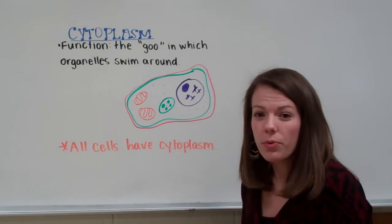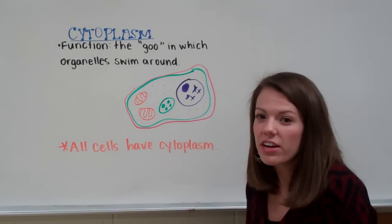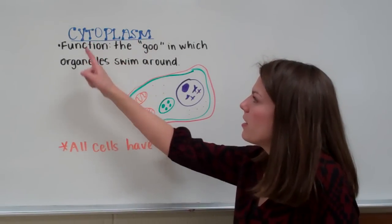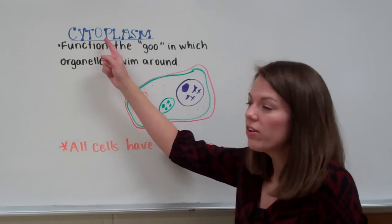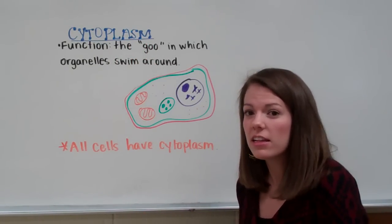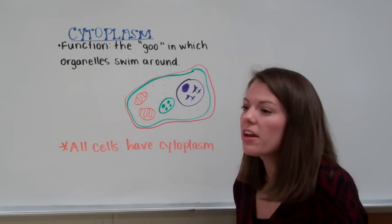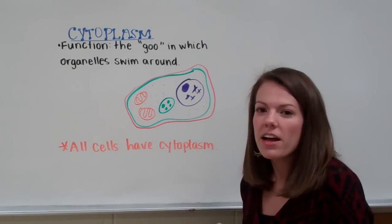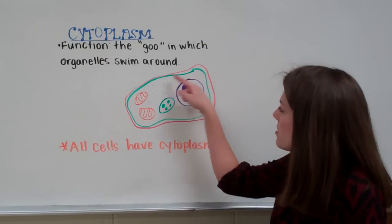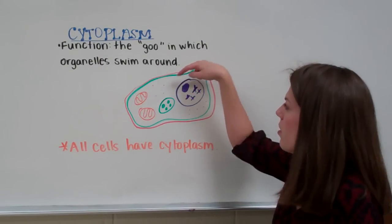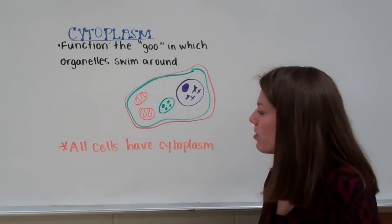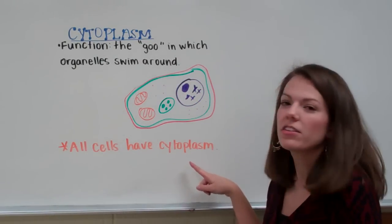The next cell structure is not actually an organelle — it's the material that organelles float around in inside a cell, called cytoplasm. 'Cyto' literally means cell, so cytoplasm is the cell goo that organelles like ribosomes, mitochondria, and chloroplasts float around in. The white space in a cell sketch represents the cytoplasm. All cells have cytoplasm.